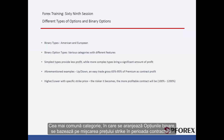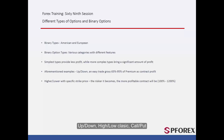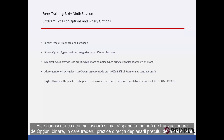The most common category in which binary options are arranged is based on the movement of the strike price during the contract time. Up-Down, also called classic High or Low, and Call or Put, is known as the easiest and most prevalent trading type of binary option, where a trader predicts the direction of the price movement from the current price.